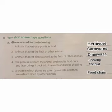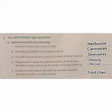Now look at the fifth question: a chain in which plants are eaten by animals and then animals are eaten by other animals. This type of chain is called a food chain. So the answer is food chain.